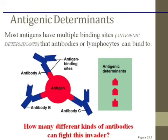So it's actually the antigen that picks the antibody, not the other way around — the antigen picks the killer. In this example, this antigen has three different antigenic determinants — three different shapes on it. So how many different antibodies can it bind to? Three. Some antigens only have one antigenic determinant, so they will only find one specific antibody that they can bind to.